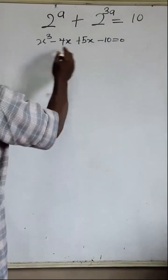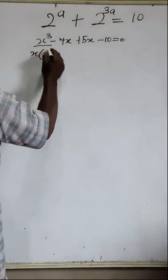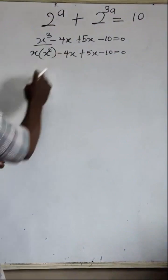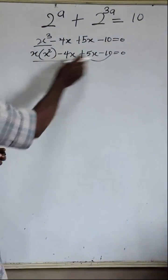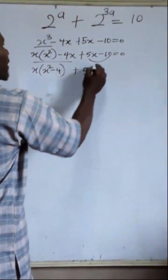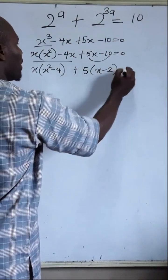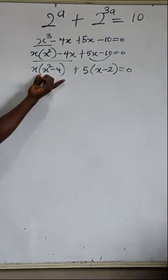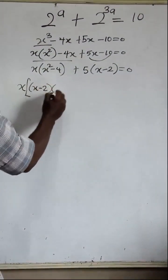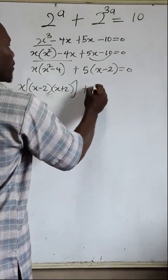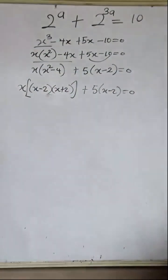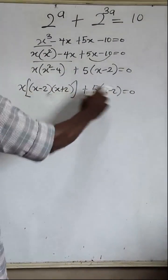This gives us x(x squared minus 4) + 5(x minus 2) = 0. Grouping the first two and last two terms, the common factor in the first group is x, leaving x squared minus 4. Applying the difference of two squares method: x(x minus 2)(x plus 2) + 5(x minus 2) = 0.